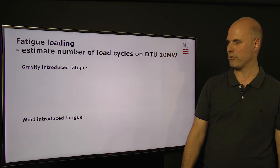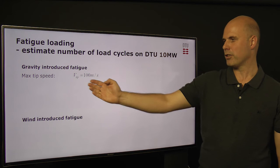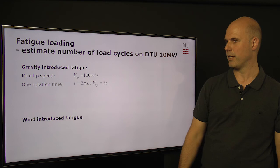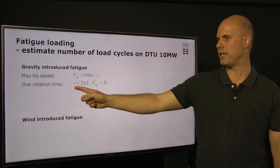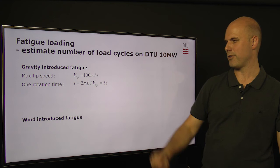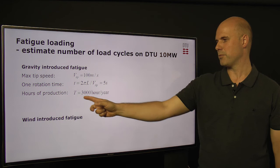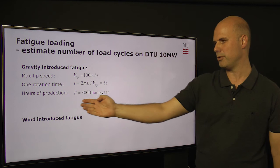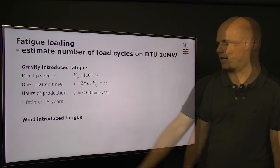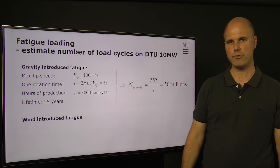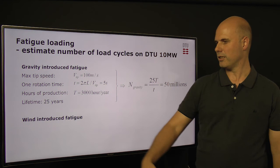As an example, I again take the DTU 10 megawatt reference blade. If you look at the material at the blade tip, 100 meters per second is normally considered the maximum tip speed in order to avoid erosion of the polymeric surface on the blade. Knowing the blade length, this limit gives the rotation period of the wind turbine, which is 5 seconds for this specific turbine. Hours of production is set to 3,000 hours per year — out of nearly 8,760 hours in a year, only part of the time is the turbine running at full production. Considering a lifetime of 25 years, we get a number of load cycles due to the gravity force equal to 50 million.